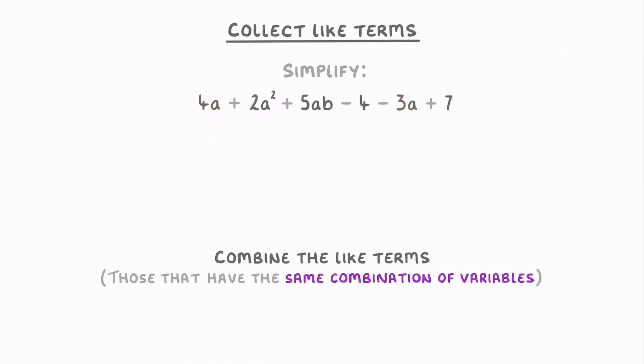In order to combine like terms, all you have to do is add them together. But you do have to take into account the sign in front of them. So for the a terms, you have to do 4a plus minus 3a, because there's a minus sign in front of the 3a.